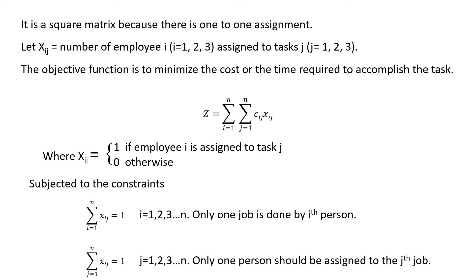The assignment problem is a square matrix, unlike the transportation problem. Transportation problem may not necessarily be a square matrix, but here it is a square matrix because there is a one-to-one assignment — one employee is assigned to only one task, and one task is assigned to only one employee. Therefore it is an n-by-n matrix.